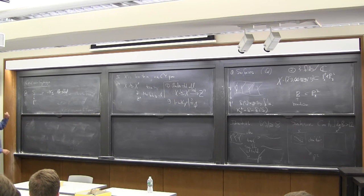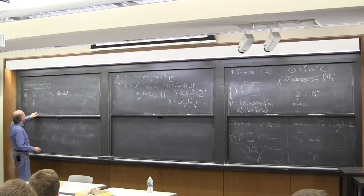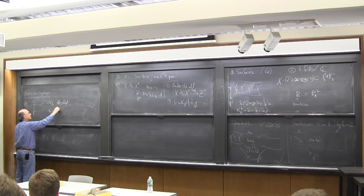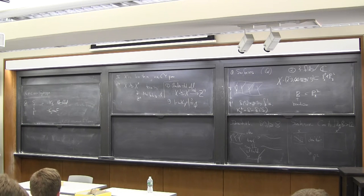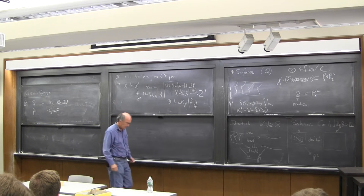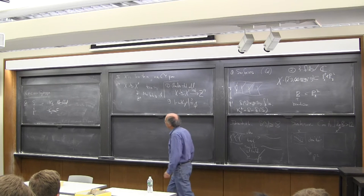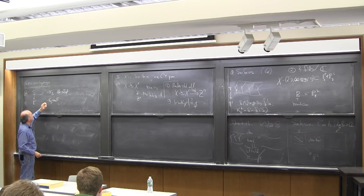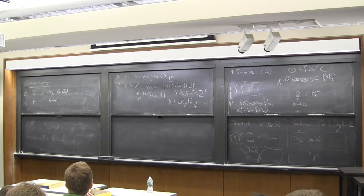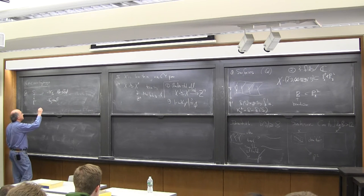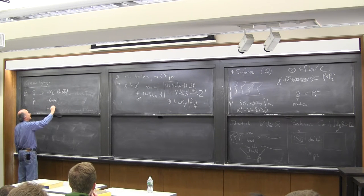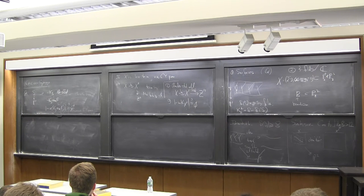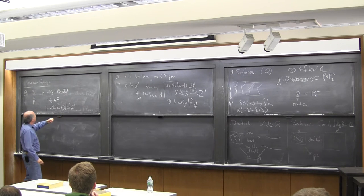For the applications I need to understand not just minus K_S but minus K_S plus m times the fiber F. Of course for large enough m this is effective, but I want to know exactly what happens. The question is: for which m is this divisor Q-effective? This requires checking infinitely many linear systems of the form r·K_S + m·F.